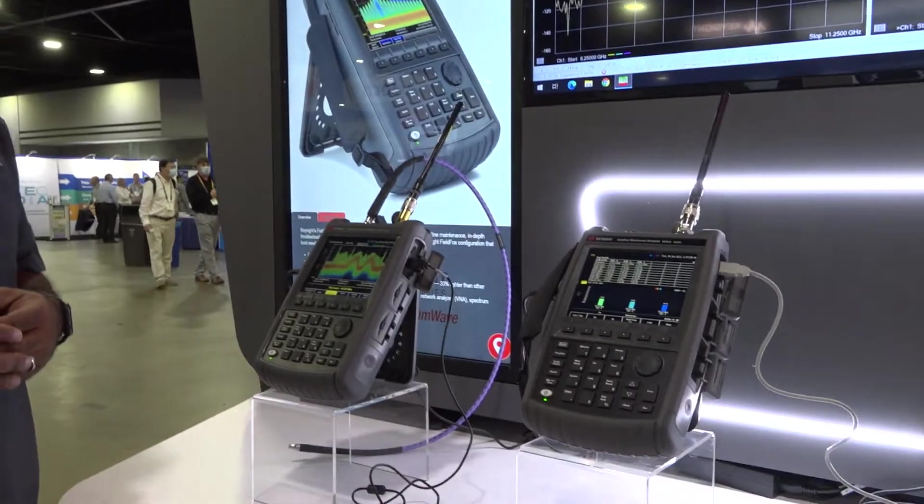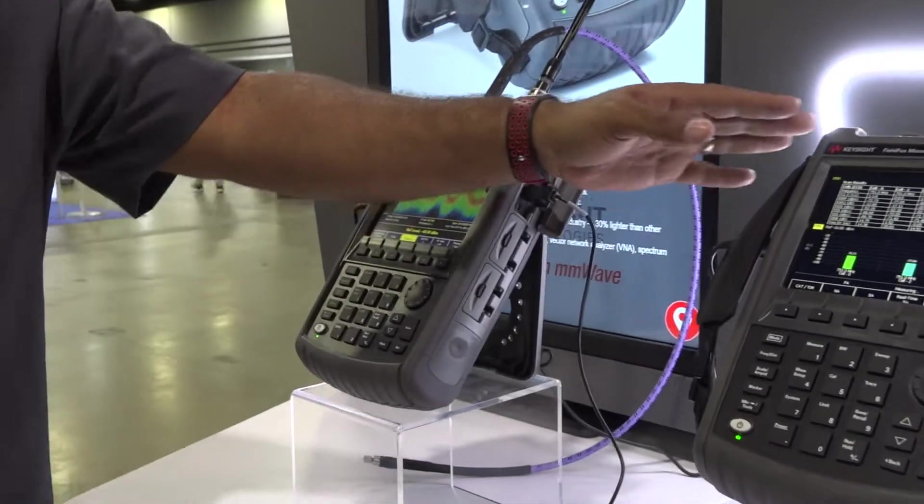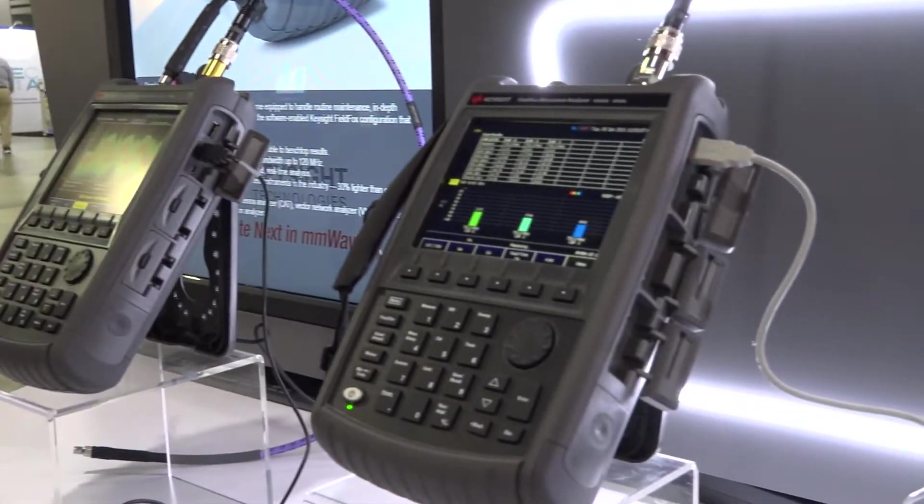We're here today to talk about the FieldFox microwave analyzers. The FieldFox microwave analyzers come in various frequency ranges. This is a 26 gigahertz version, this is a 50 gigahertz version, and there's also a 54 gigahertz version.